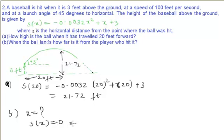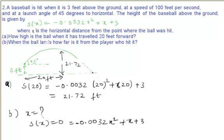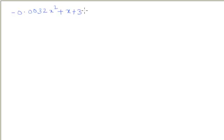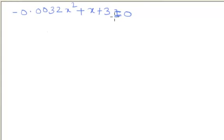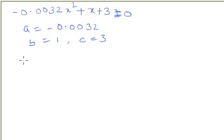S(x) is given as 0, and we already know that S(x) equals minus 0.0032x² plus x plus 3. This is the equation, and since this value is 0, we need to calculate the value of x using the formula method. Comparing the given equation minus 0.0032x² plus x plus 3 equals 0, we identify a equals minus 0.0032, b equals 1, and c equals 3.